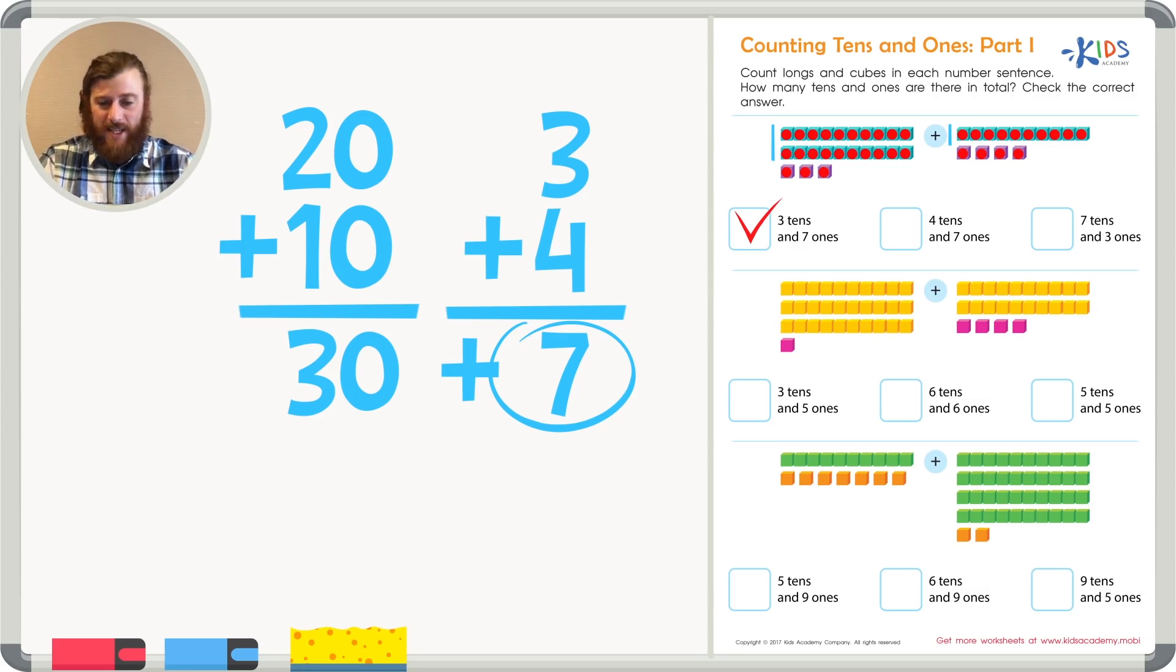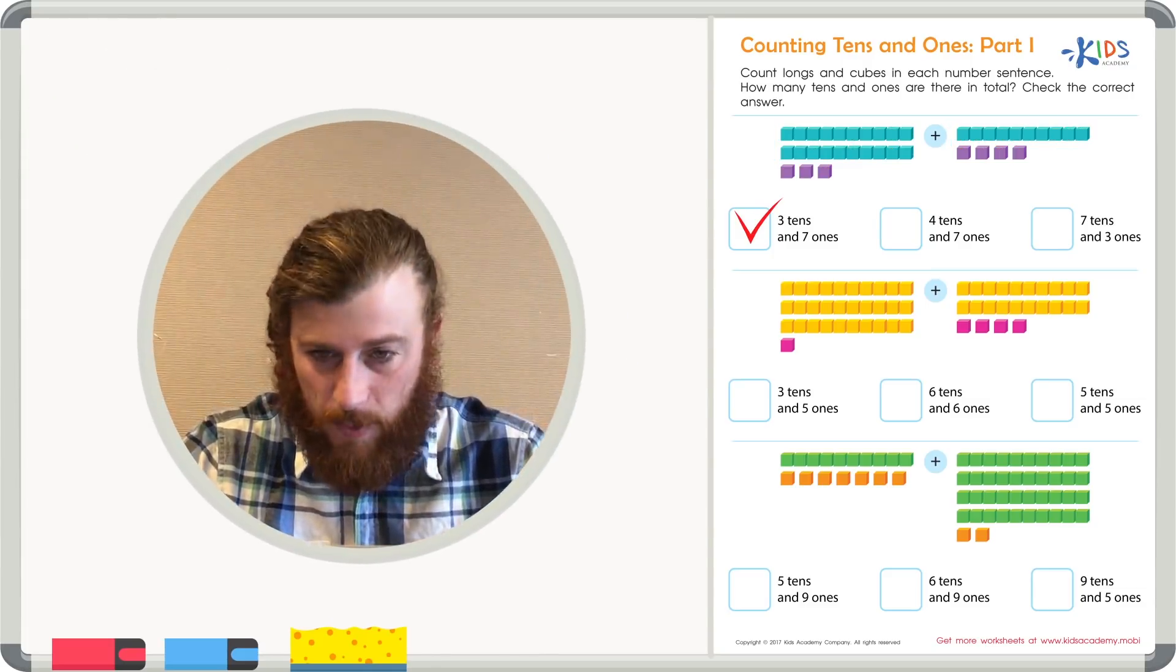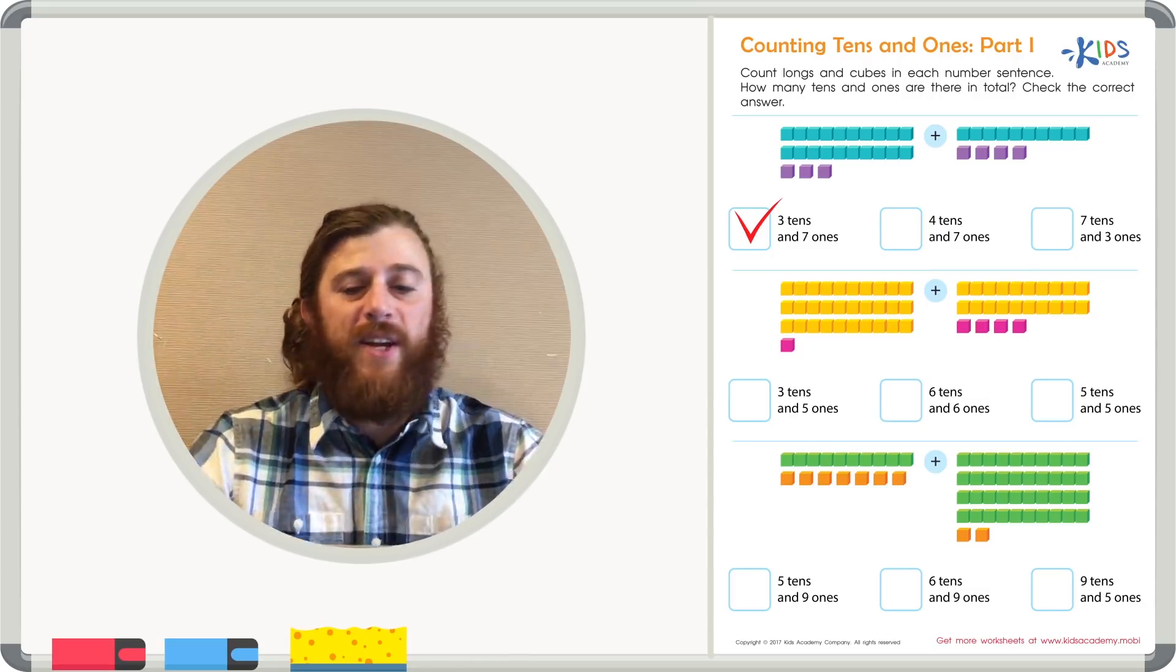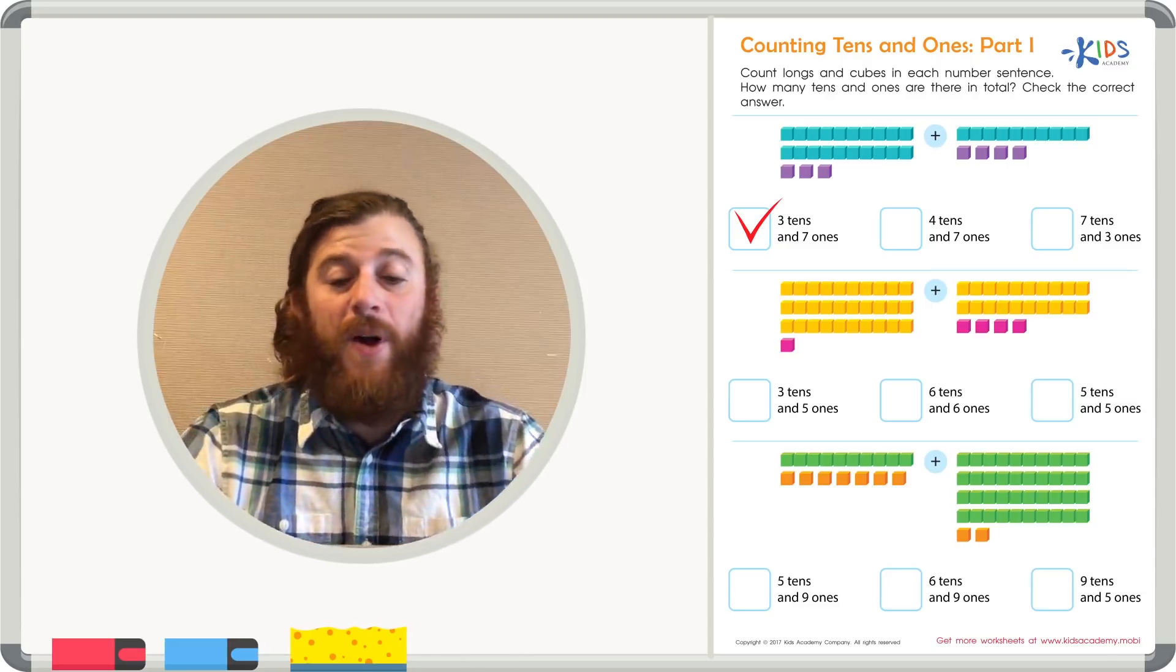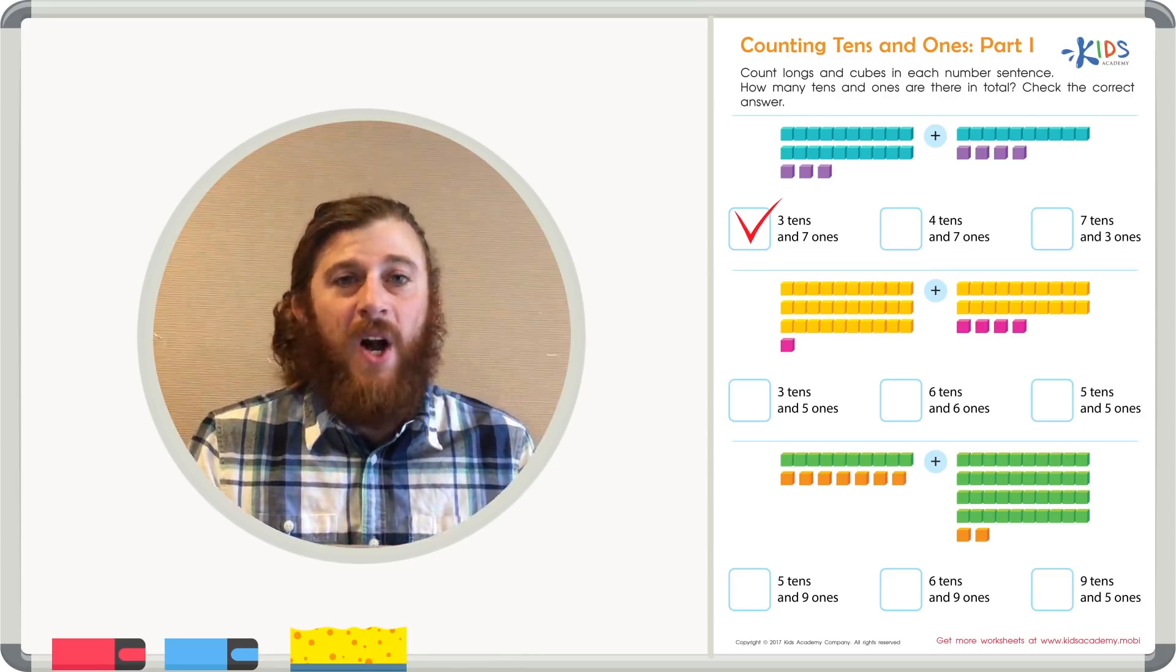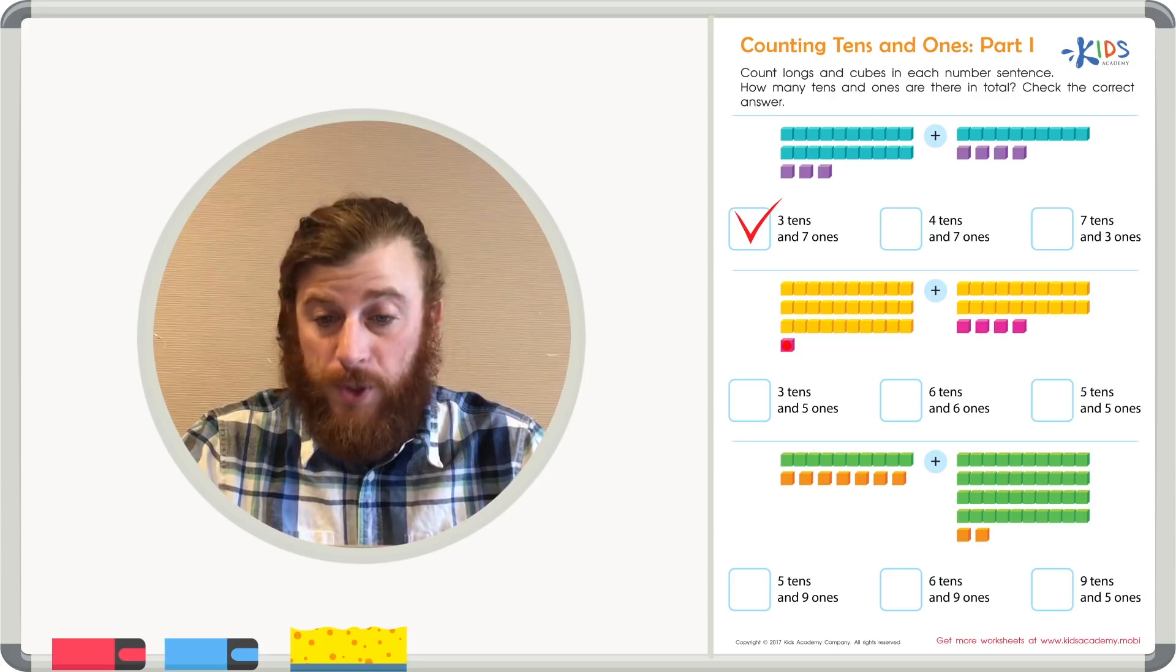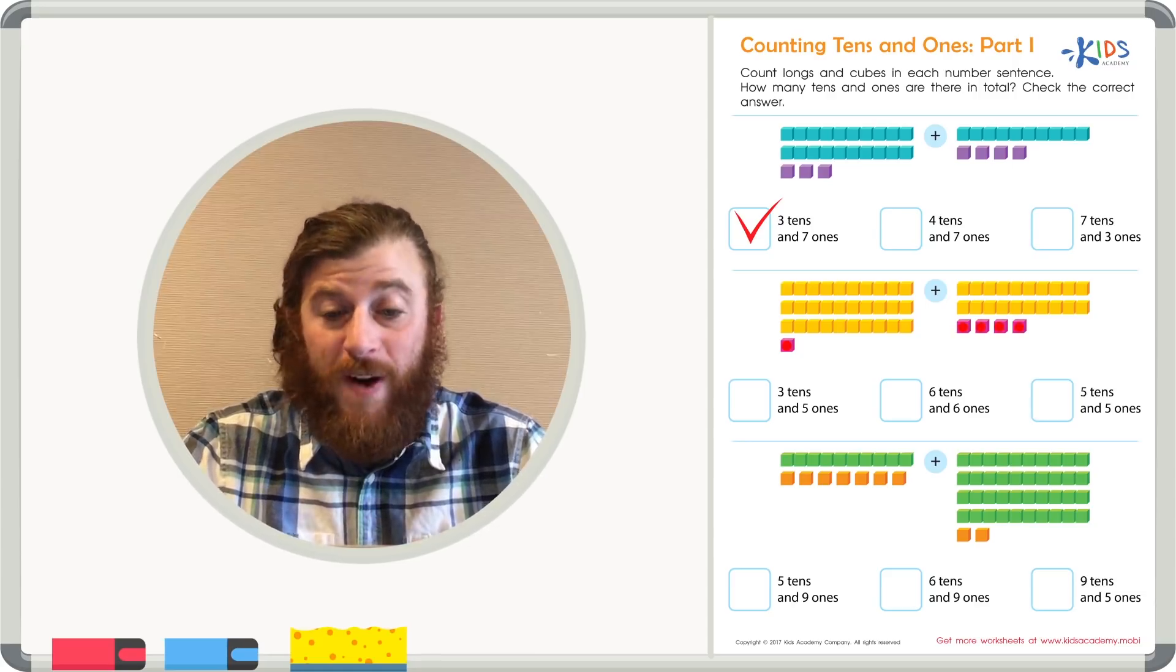Let's take a look at the next example. Let's start by counting the ones in the second example. Let's count them all together right from the start. On the left side of the equation, I just see one cube. Let's continue counting on the right side of the equation. So we have one, two, three, four, five cubes, or five ones.